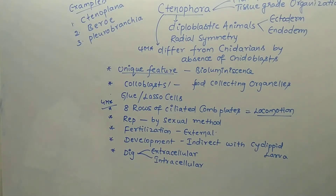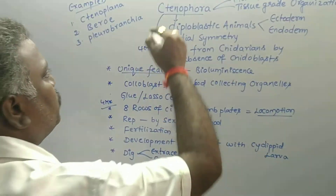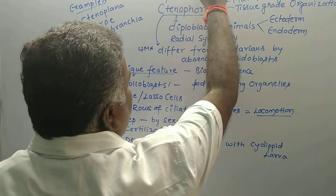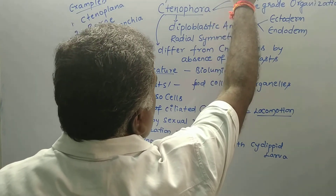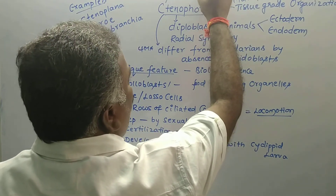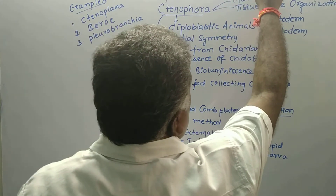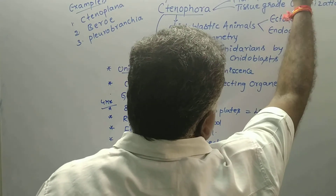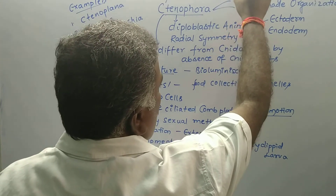Ctenophores are marine organisms with tissue-grade organization, and are commonly called Sea Gooseberries or Sea Walnuts — also known as Comb Jellies.